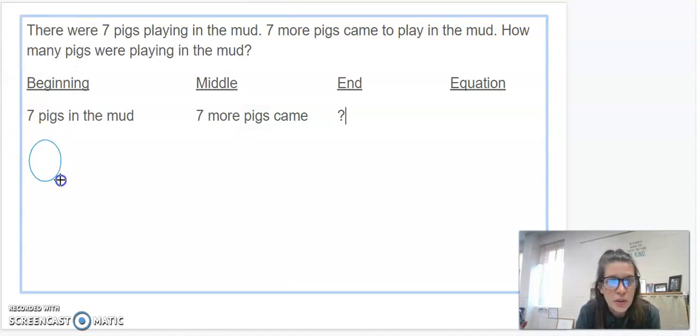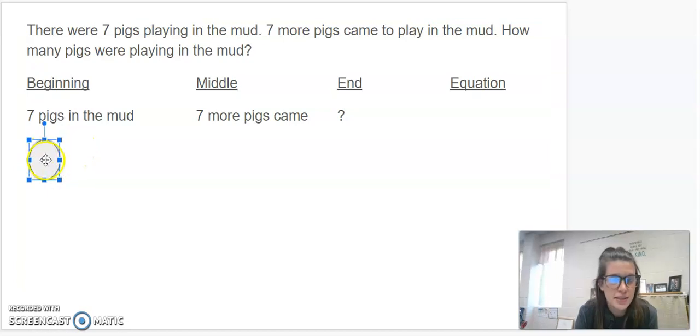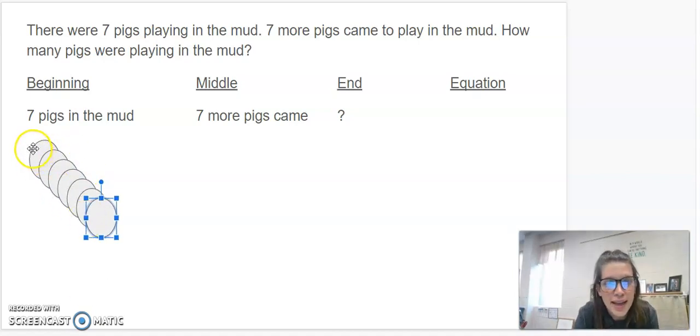So, in the beginning, I know there were seven pigs. So, there's one, two, three, four, five, six, seven. I'm going to count again just to double check. One, two, three, four, five, six, seven.